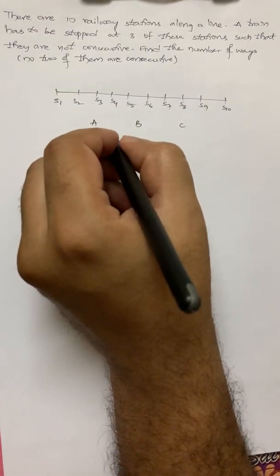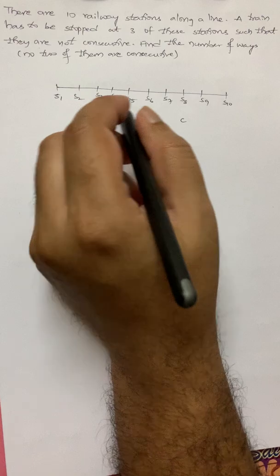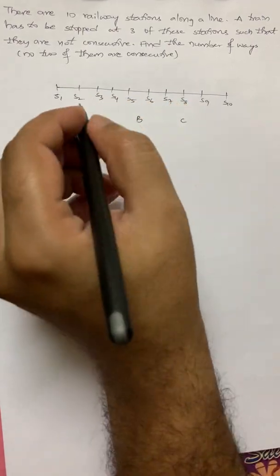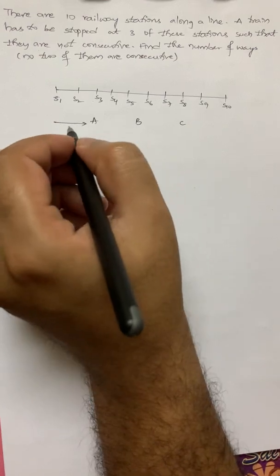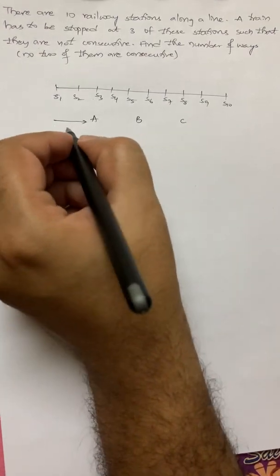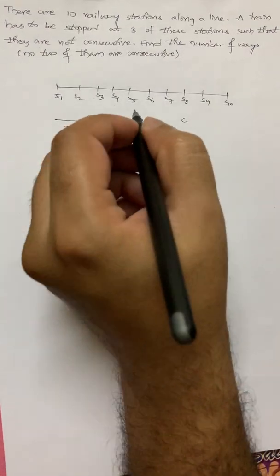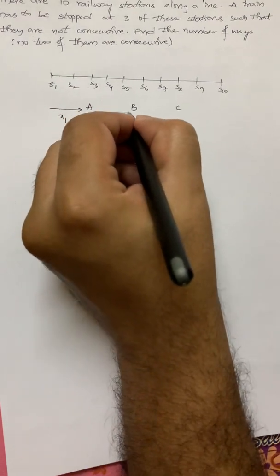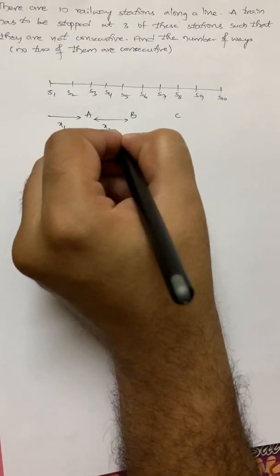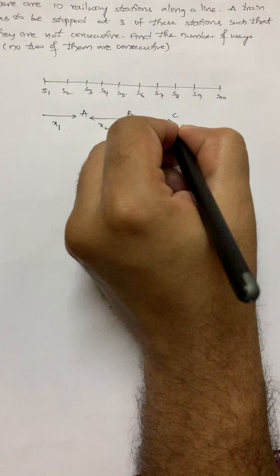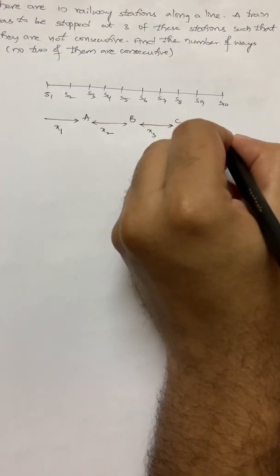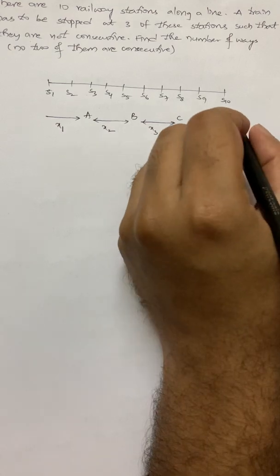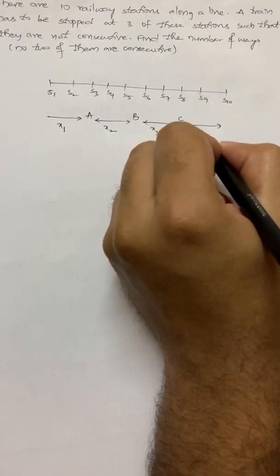If I solve this question with the help of generating function, it will become easy. What we will do is, the number of stations to the left of A are x1, between A and B are x2, between B and C are x3. To the right of C, I mean after C, the number of stations left is x4.